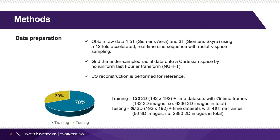First is data preparation. We obtain raw data at 1.5T and 3T using a 12-fold accelerated real-time cine sequence with radial case-based sampling, and then grid the under-sampled radial data onto a Cartesian grid by non-uniform fast Fourier transform. CS reconstruction is then performed for reference.